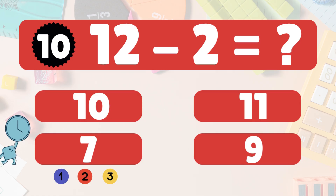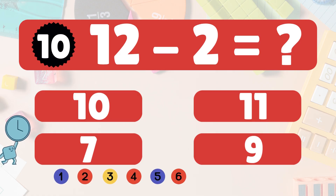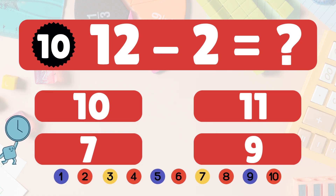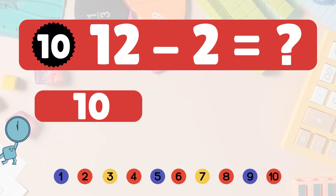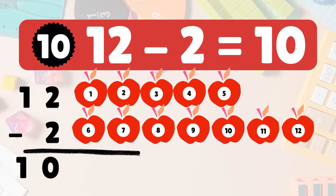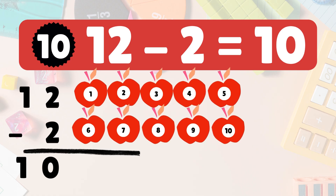Next, 12 minus 2 equals what? 12 minus 2 is 10. Here we have 12 apples. Take 2 away — 10 apples left: 1, 2, 3, 4, 5, 6, 7, 8, 9, 10. So 12 minus 2 is 10. Super job!